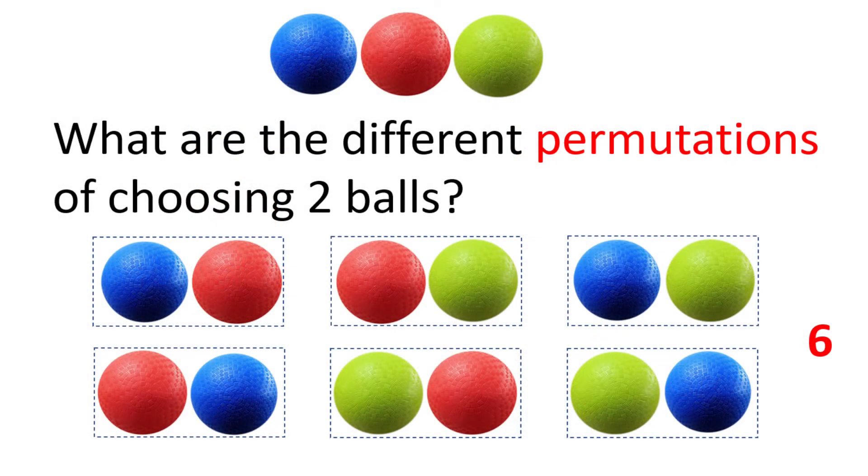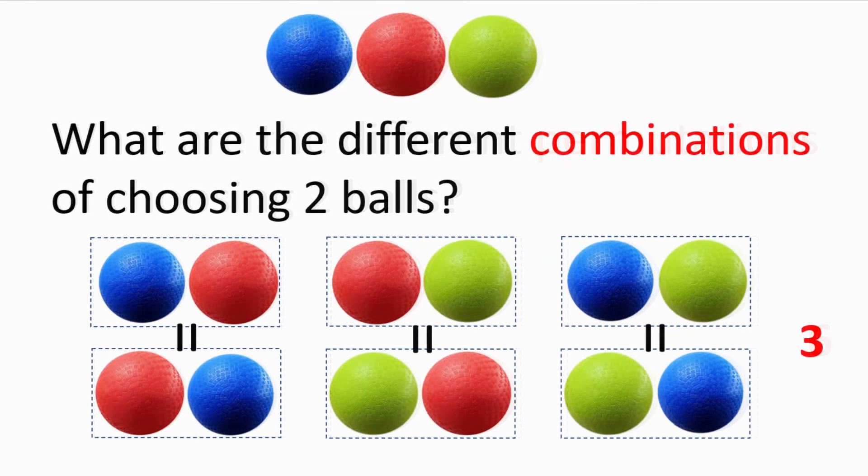Let's start with a simple example. Consider a set of blue, red, and green balls. What are the different permutations of choosing two balls? It is straightforward to see that there are six different permutations. You pick blue then red, or you pick red then blue, and so on.